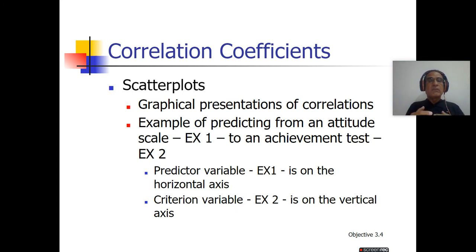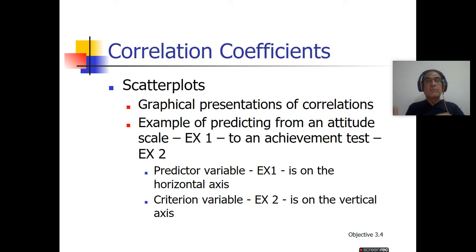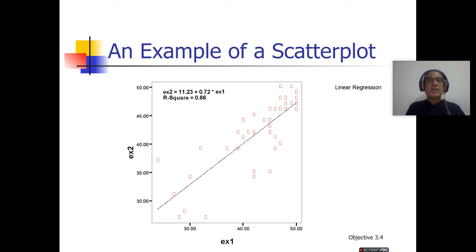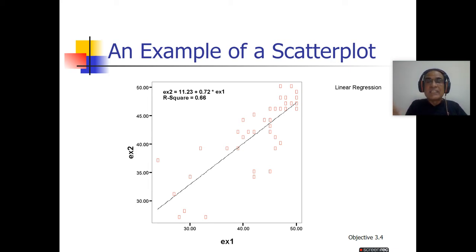For correlation, we draw the scatter plot. A scatter plot is basically a graphical representation of correlation between two or more variables. For example, predicting from an attitude scale: the predictor variable is on the horizontal axis and the criterion variable is on the vertical axis. You can see the scatter plot picture here. The line shown is linear, so we call it linear regression, indicating a direct relation between the two variables.